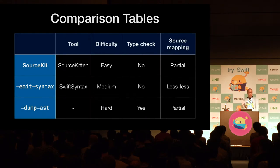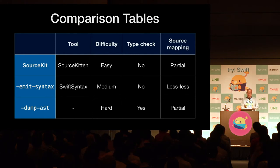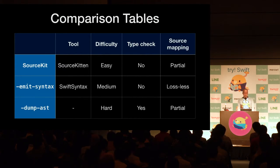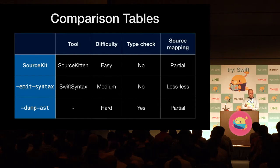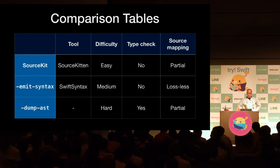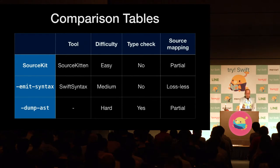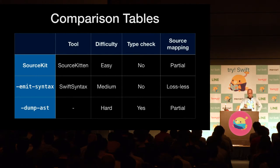This is a comparison table of the features of each AST. SourceKit AST is simple and the information is not very detailed, but it is stable. A lot of open source libraries use SourceKit, so it is the best first choice when you start making something with AST. Swift Syntax is the second easiest option; however, the specifications are changing frequently as it is currently under active development, and there are few open source libraries using Swift Syntax yet. Dump AST is the most powerful AST, but you have to parse it yourself and the specification is also unstable, so using it is a very hard way.